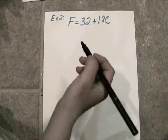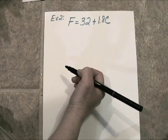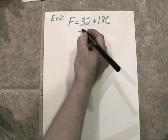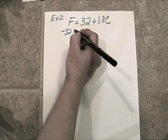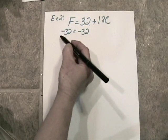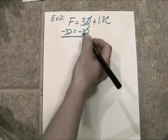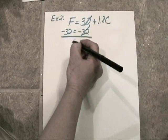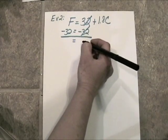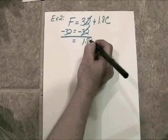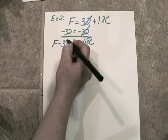First thing we would like to do here is get rid of this 32 algebraically. So, we're going to subtract 32 from both sides of the equation. Now, of course, that's the same thing as adding a negative 32, which is the opposite of a positive 32. So, when we do this, we're going to end up with 0 here. And, of course, 0 plus 1.8C is just 1.8C. Now, over here, I'll get the Fahrenheit temperature minus 32 degrees.